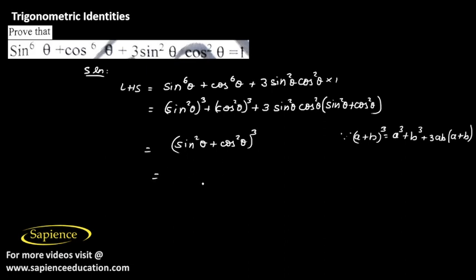Now sin square theta plus cos square theta is 1 so LHS is equal to 1 cube or 1 which is RHS hence proved.